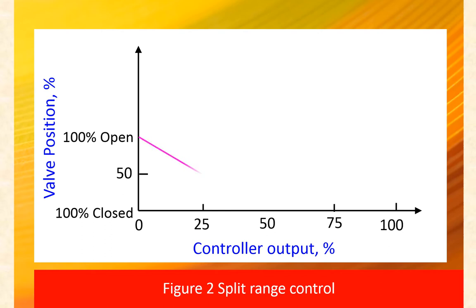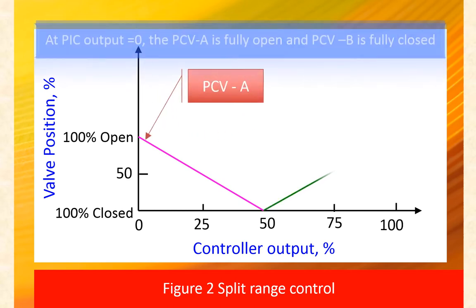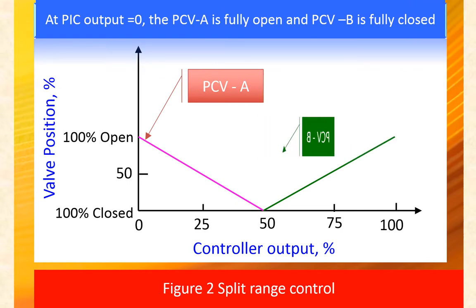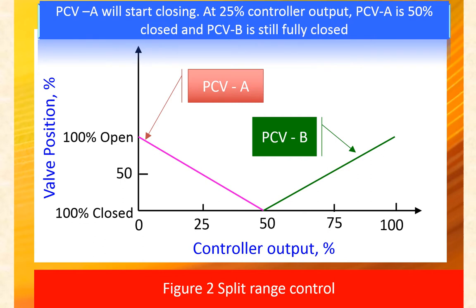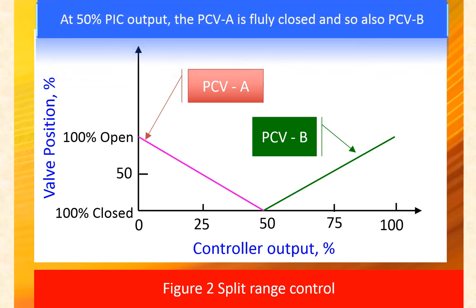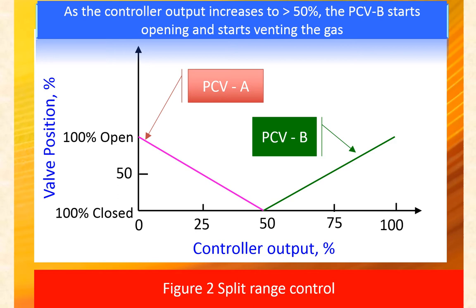This figure illustrates the function of a split range control valve with a valve opening versus pressure controller output diagram. Initially, control valve PCVA is fully open and PCVB is fully closed. As pressure increases above the set point, the controller output starts increasing from zero and PCVA begins to close. At 25% controller output, PCVA is 50% closed and PCVB is still fully closed. As controller output increases above 50%, PCVA goes to full close while PCVB remains fully closed.